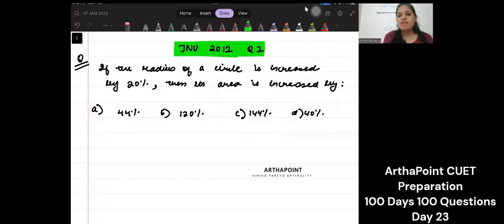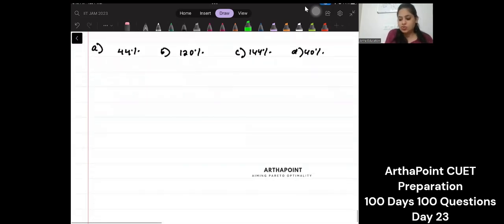Hi, good evening everyone. Today we will take JNU 2012 question number 2. Let's have a look at it. If radius of a circle is increased by 20%, then its area is increased by. Very easy question.